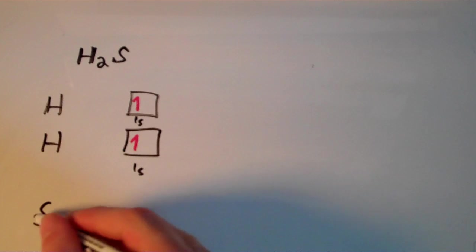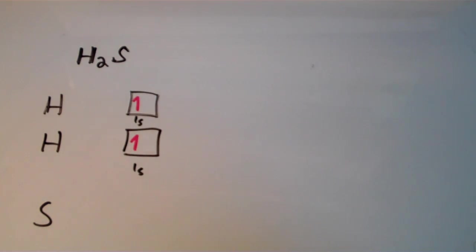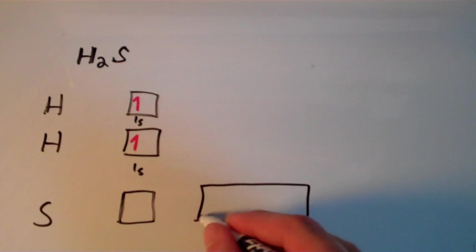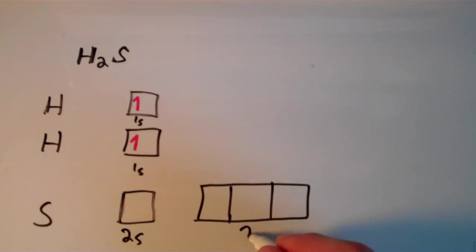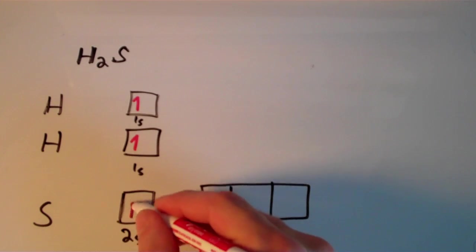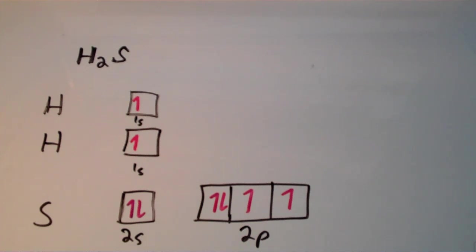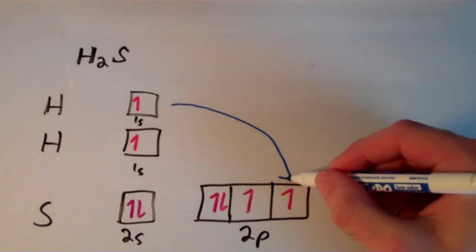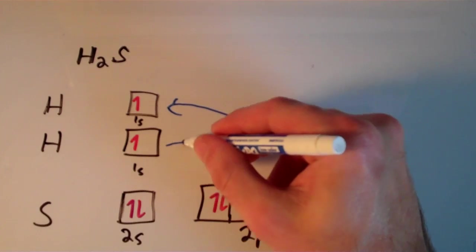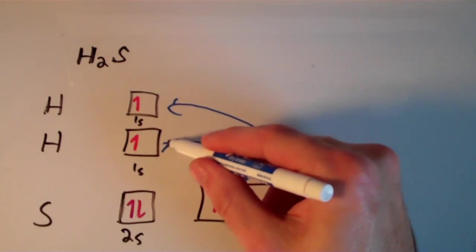And for sulfur, the ground state electron configuration, at least for the valence shell, which is the shell that we're concerned with here, this is valence bond theory after all, is we have the 2s orbital and the 2p orbitals. And the configuration is 2s2, 2p4, so that's going to be something that looks like this. So notice that we have two half-filled 2p orbitals on the sulfur atom, and then each of the hydrogens has a half-filled 1s orbital. So the idea is, maybe the 1s orbital from the hydrogen can overlap with the 2p orbital on the sulfur.